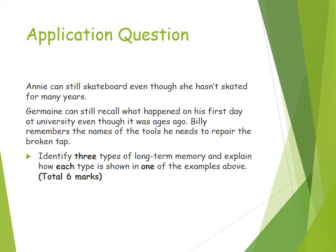Procedural memories are memories to do with a skill or action and can be recalled with little effort — for example, Annie can still skateboard because it is a skill she has learned, even though she hasn't done it for many years. The third type is semantic memory, which is to do with knowledge of the world around us, including words, signs, and symbols — so Billy remembers the names of the tools he needs to repair the broken tap.